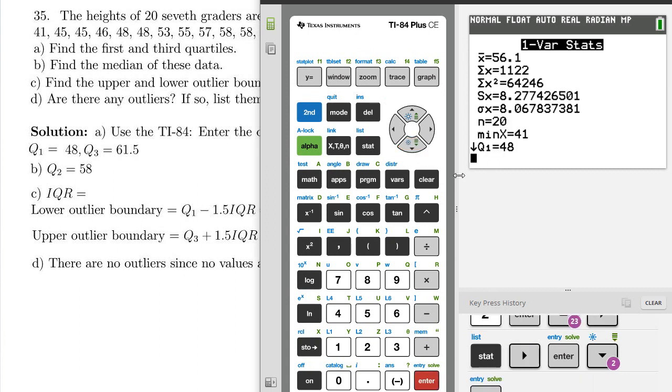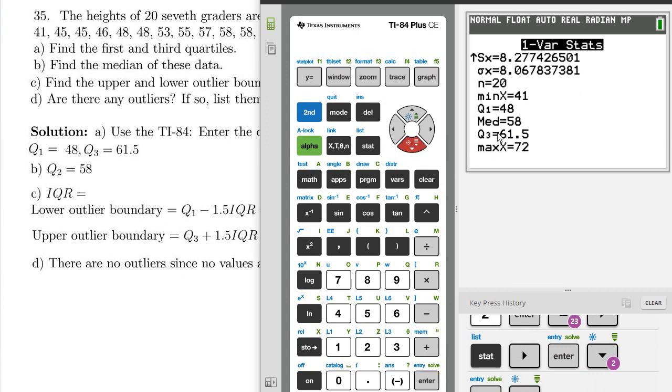Calculate, and so our Q1 right there is 48, so that's right here. Scroll down. Median, which is Q2, is 58 right here, and 61.5, Q3 right here. So that answers A and B.